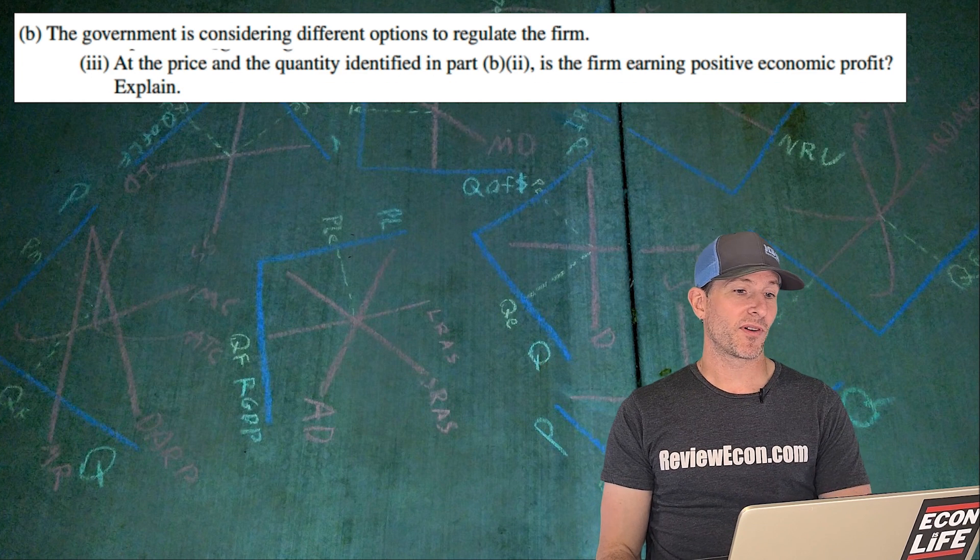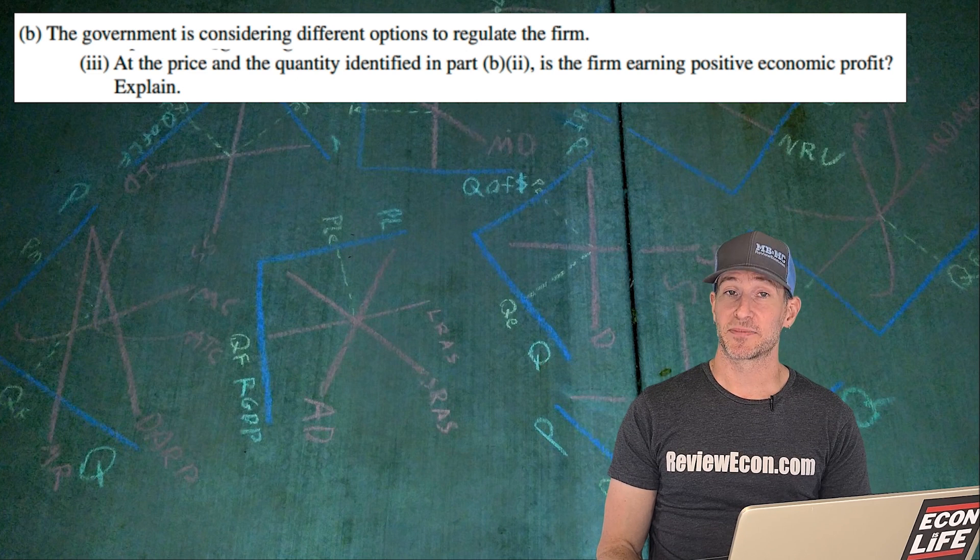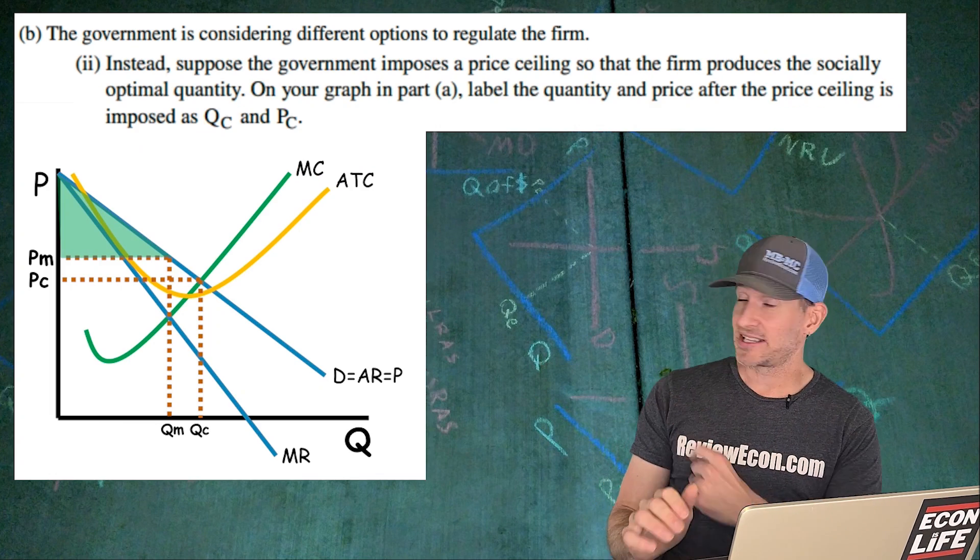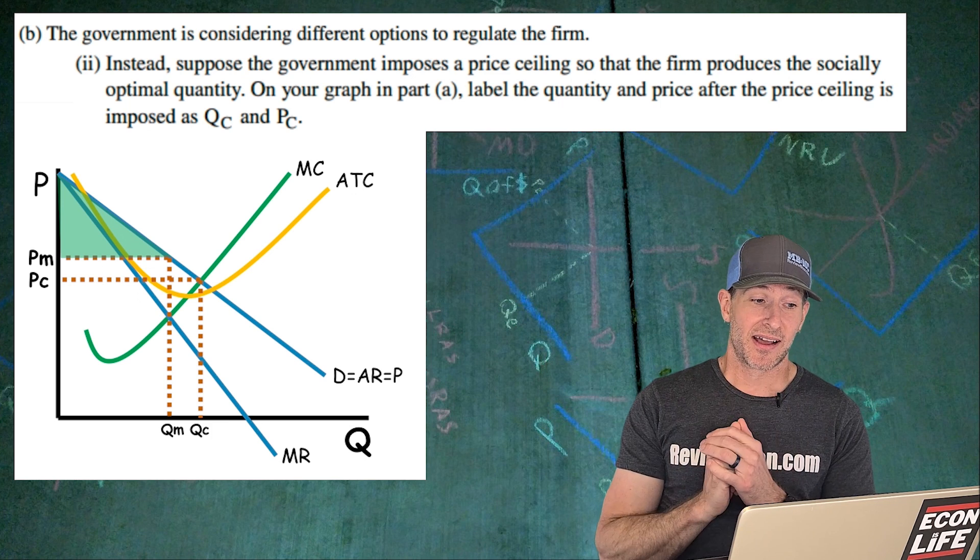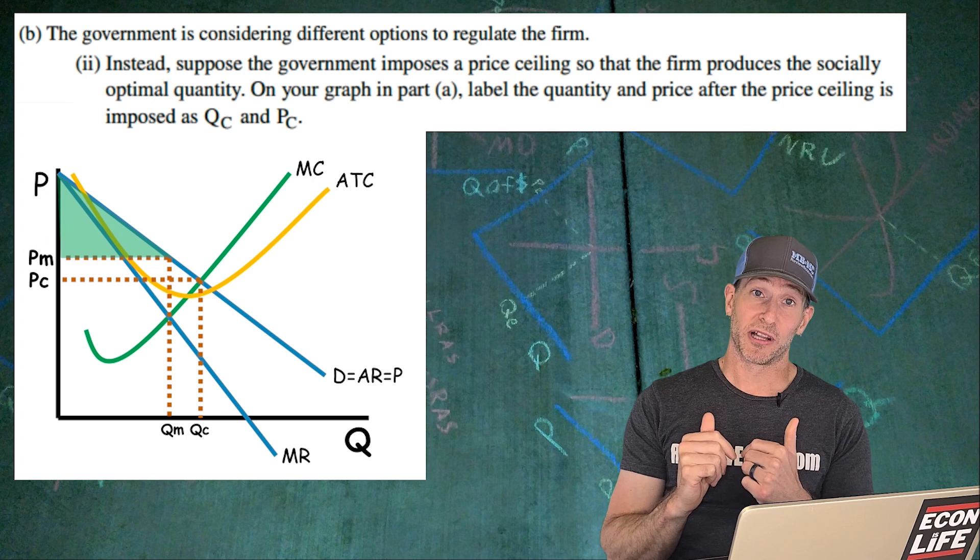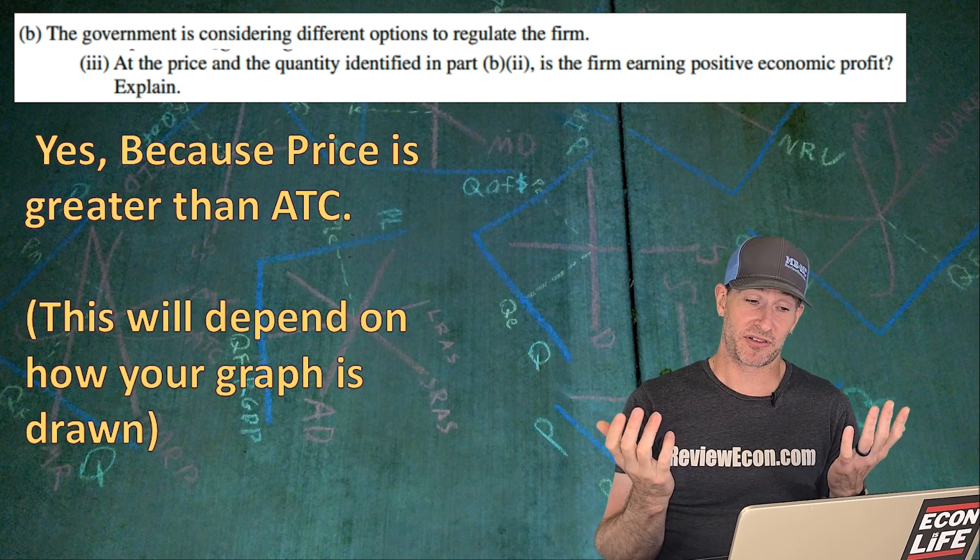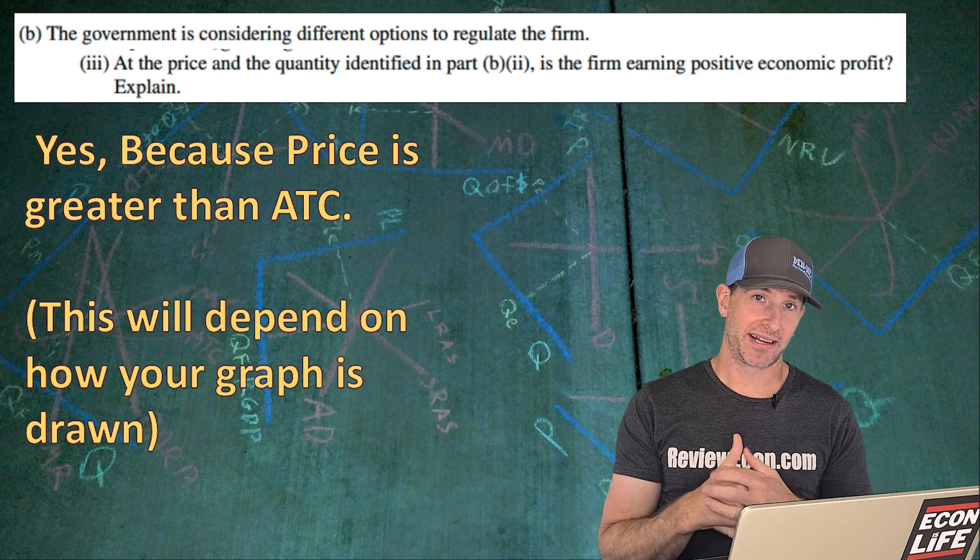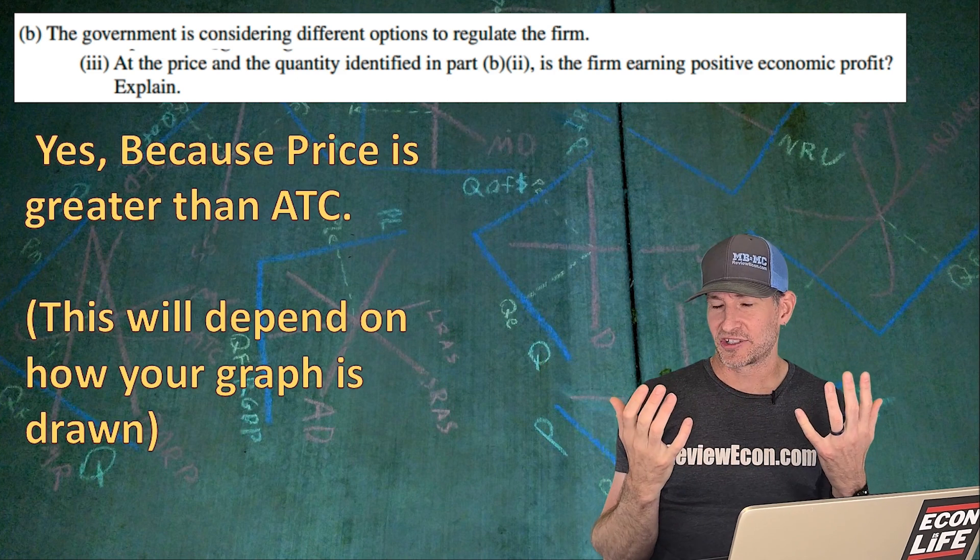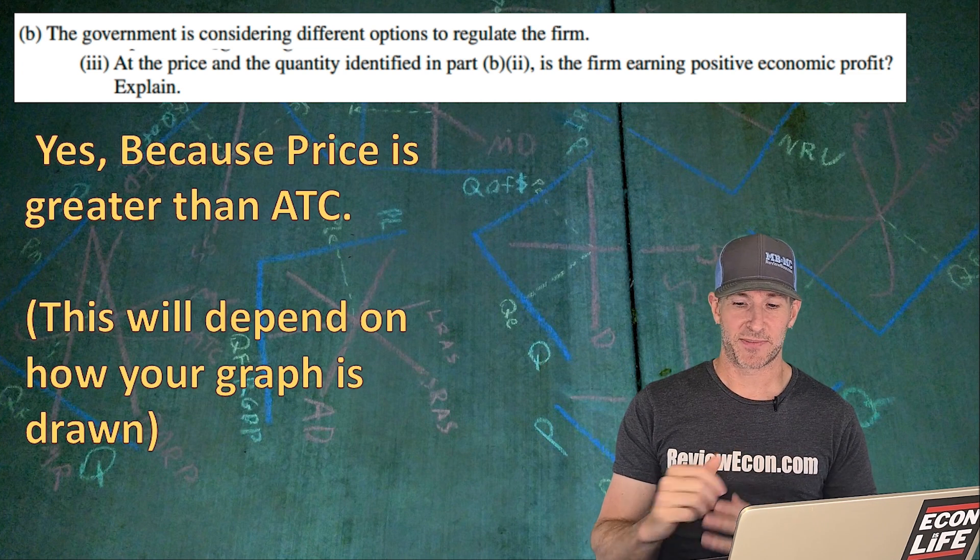On to the next part. At the price that we just identified, is the firm earning positive economic profit? Explain. This one's going to depend on how you drew it. But as you can see on the way I drew it, at that PC price at the quantity of QC, the average total cost curve is a little below that price. So my answer here is yes, because the price is greater than the average total cost at that quantity of QC. I do think that depending on how you drew the graph, there's a chance you'd get the point by saying the other way because it'll be consistent based on the graph, I expect.